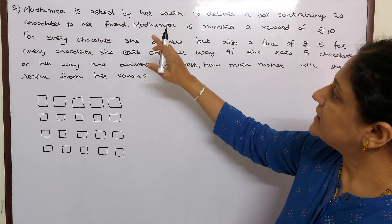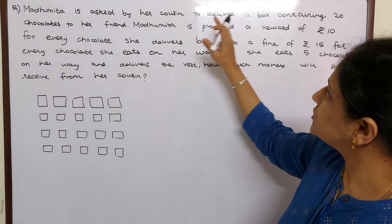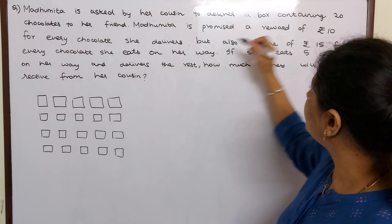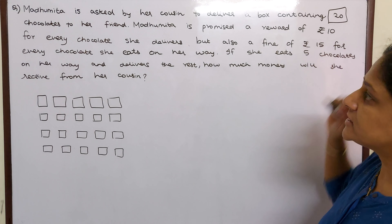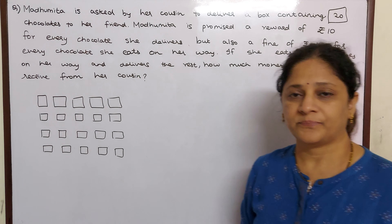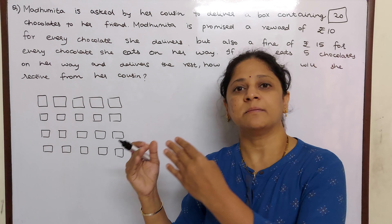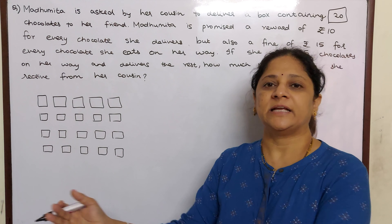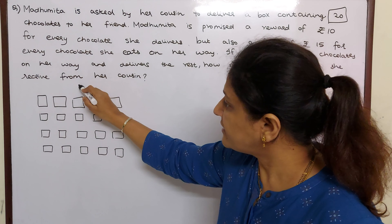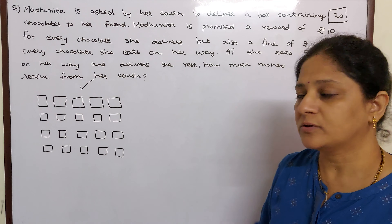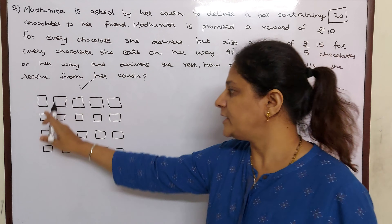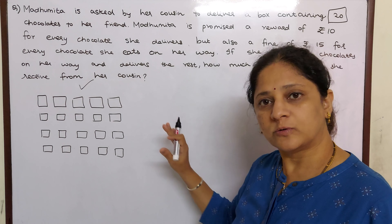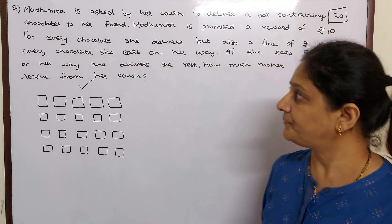Madhumita is asked by her cousin to deliver a box containing 20 chocolates to her friend. That means her cousin is telling Madhumita, please go and give these 20 chocolates to my friend. So these are the 20 chocolates which Madhumita has to give to her cousin's friend.